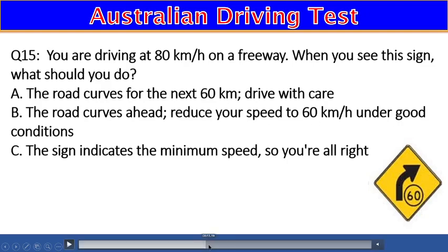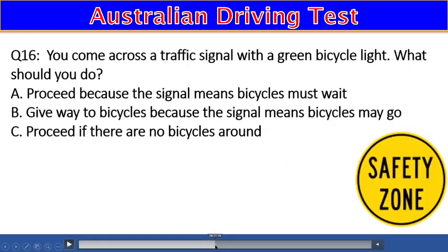Question 16: You come across a traffic signal with a green bicycle light. What should you do? A) Proceed because the signal means bicycles must wait, B) Give way to bicycles because the signal means bicycles may go, C) Proceed if there are no bicycles around. The right answer is B — give way to bicycles.